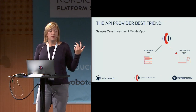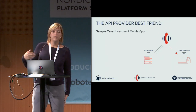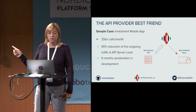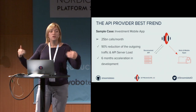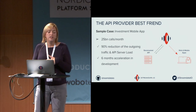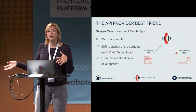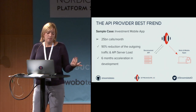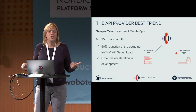Here's a real use case: one of our customers has an investment mobile app. These are Android numbers only. They received 25 billion calls per month, and by putting the proxy in front of their API, they reduced outgoing traffic and API server load by 90 percent. They were paying $9,000 per month and now they pay $900. And they gained six months' acceleration in development — since it's serverless, you don't need to change anything in your code.